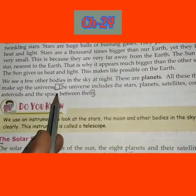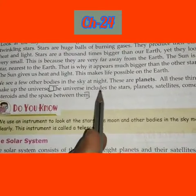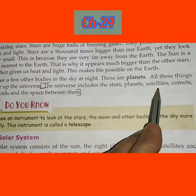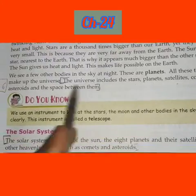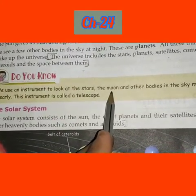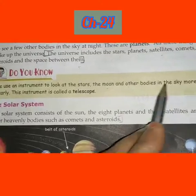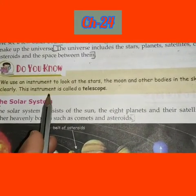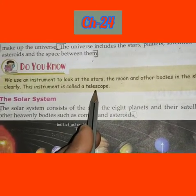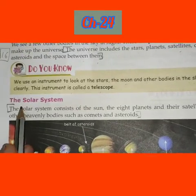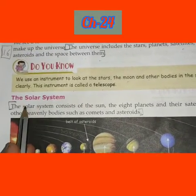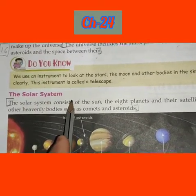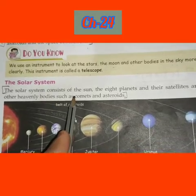All these things make up the universe. The universe includes the stars, planets, satellites, comets, asteroids, and the space between them. We use an instrument called a telescope to look at the stars, the moon, and other bodies in the sky more clearly.